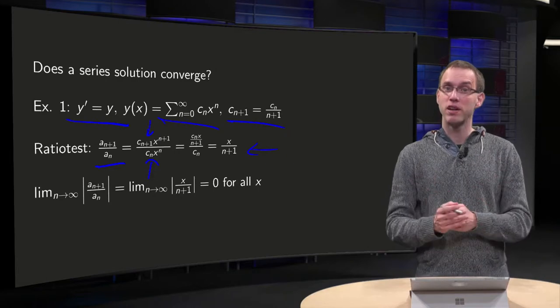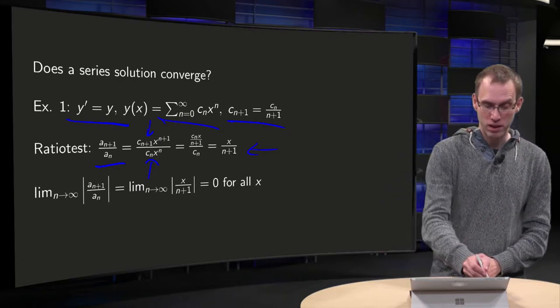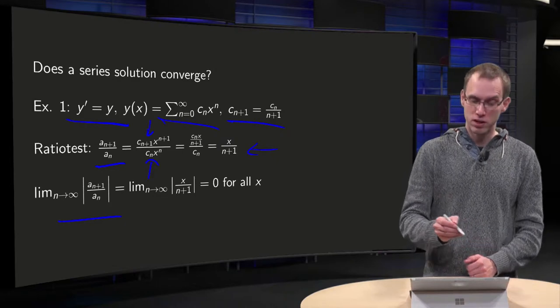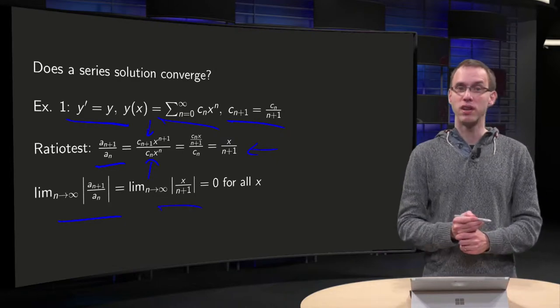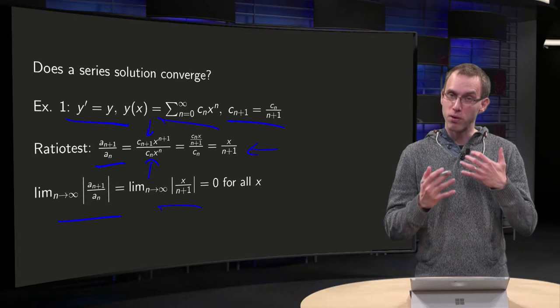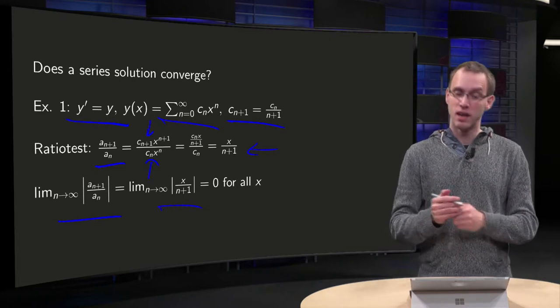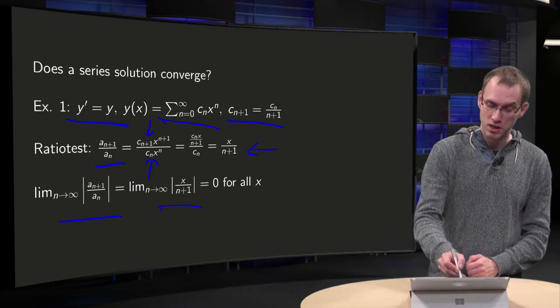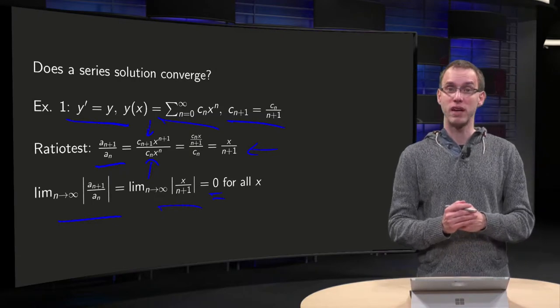Then, to apply the ratio test, we take absolute value and take the limit n to infinity, and then we see that we have to plug the limit n to infinity, x over n plus 1, for fixed x.